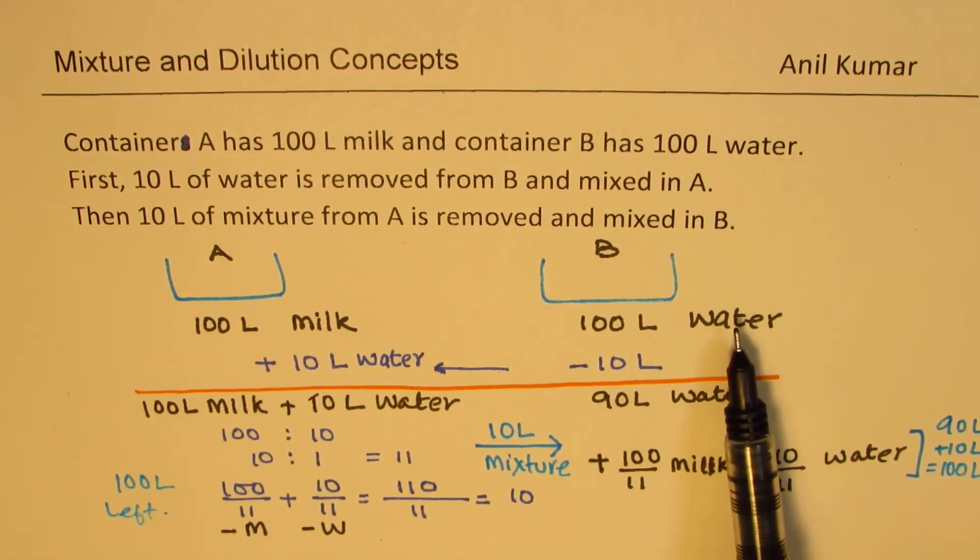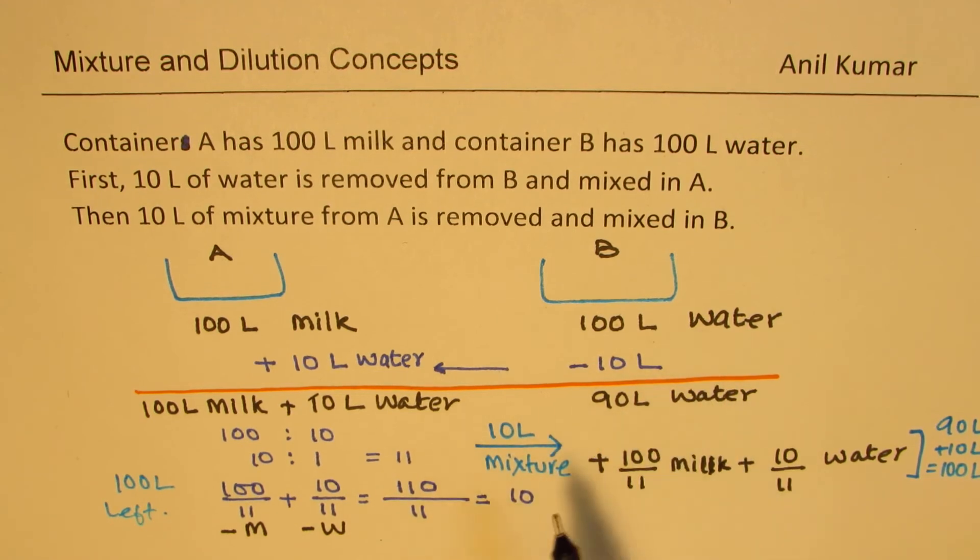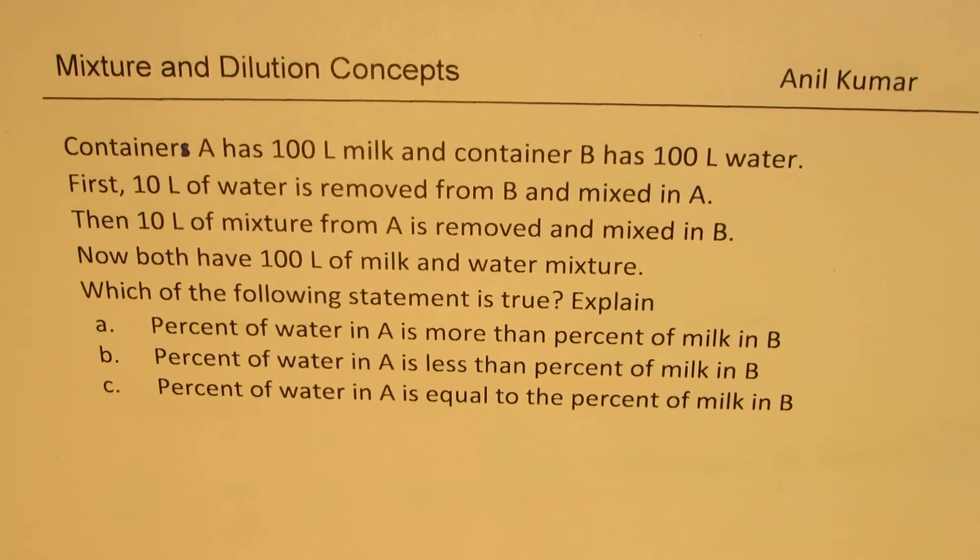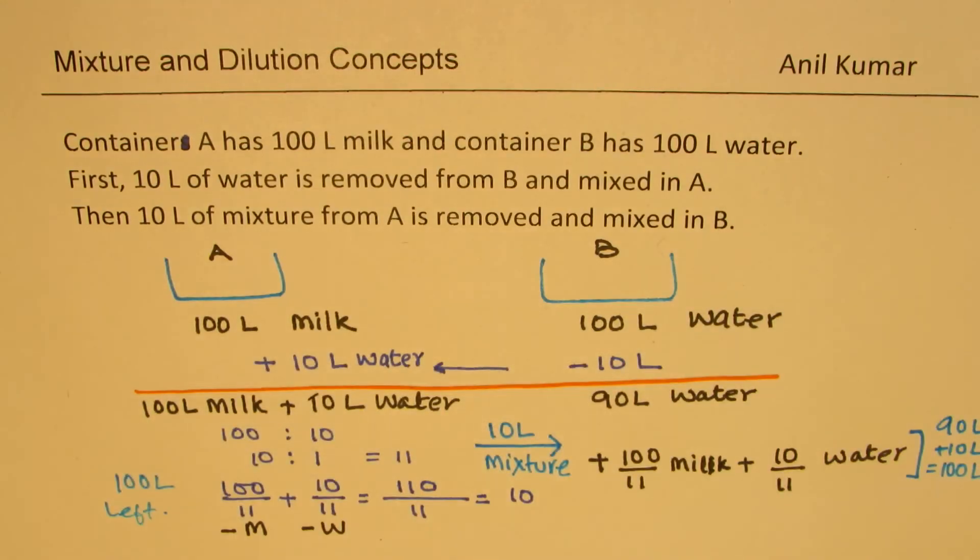So now it is a simple thing. In this water we have 100 over 11 of milk. So what we really want to figure out is let's figure out how much water is there. So let's find water in A.